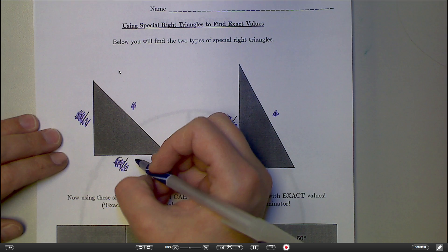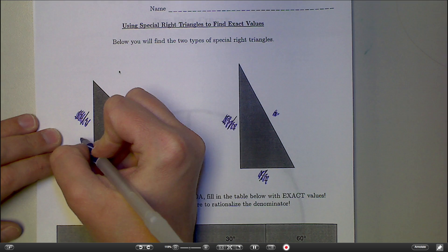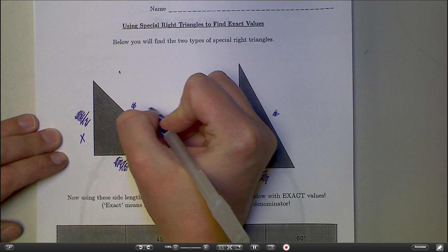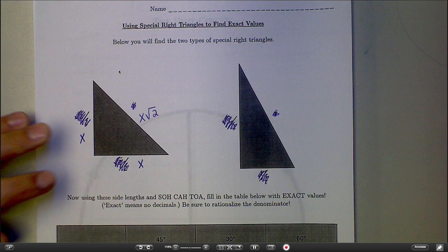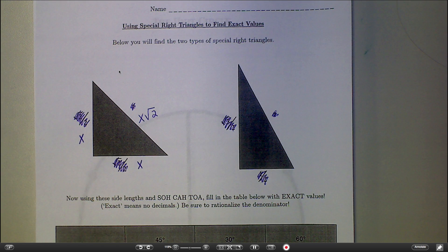Just to remind you, in a 45-45-90 triangle, the legs are X and X, and the hypotenuse is X square root of 2. Hopefully that looks at least a little bit familiar, but again, you're not responsible for knowing that. This is just how we're going to fill in our table down below.